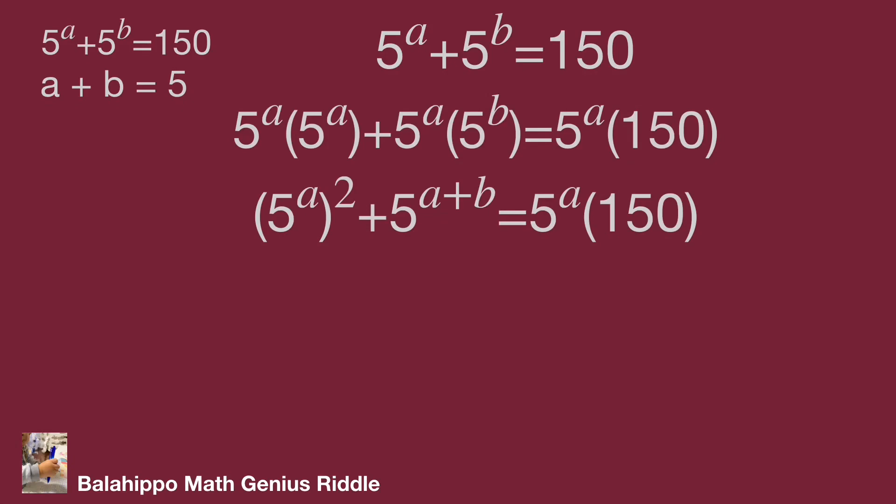The equation changes to 5 power of a squared plus 5 power of a plus b equal to 5 power of a multiply 150.